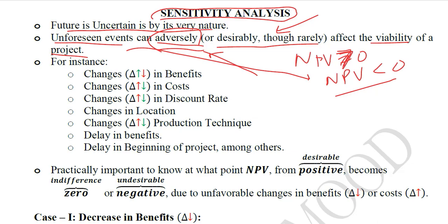A few examples are mentioned here. It includes unexpected changes in the benefits. The green color arrow is upwards, meaning that the benefits are favorably changing, whereas the red arrow is downwards and shows unfavorable changes in benefits. Definitely, if the benefits decline it is an unfavorable change, and if the benefits increase it is a favorable change. In the costs, an unexpected increase shown in red is an undesirable change, and an unexpected decrease in costs is a favorable change.